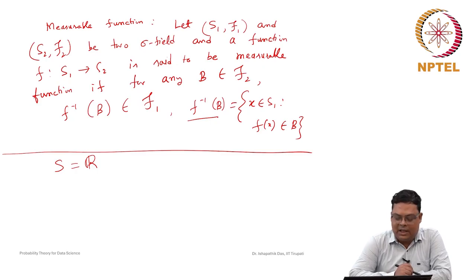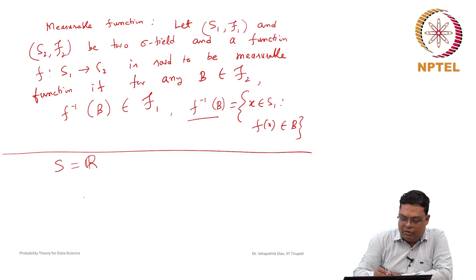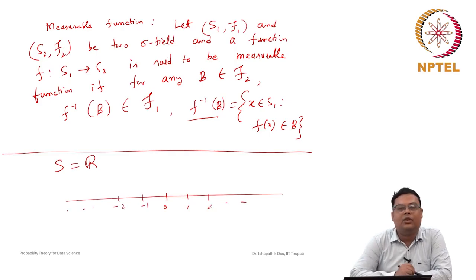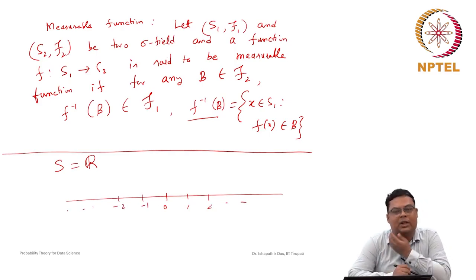We usually denote real numbers by a line — 0, 1, 2 on one side, and minus 1, minus 2 on the other side. So we usually denote it like this.